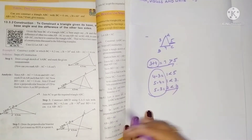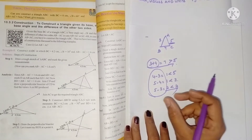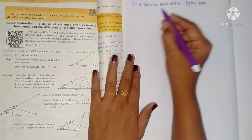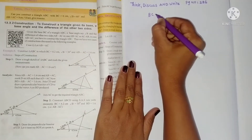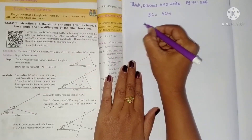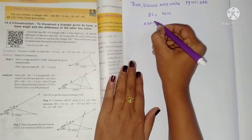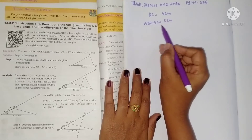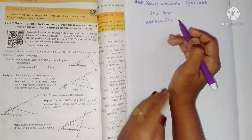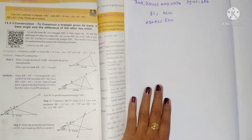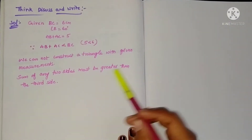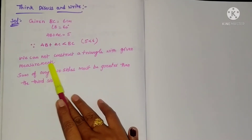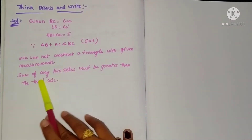The sum of two sides must be greater than the third side — only then can we form a triangle with those measurements. Here, one side given is 6 centimeters and the sum of the other two sides AB plus AC equals 5 centimeters. Since the sum of two sides is less than the third side, we cannot construct a triangle. We write: since the sum of two sides is less than the third side, we cannot construct a triangle with the given measurements.